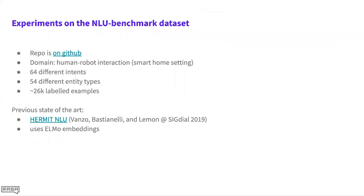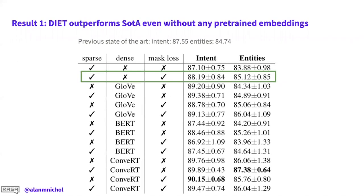The benchmark dataset we use is called the NLU benchmark dataset — there's a link to the GitHub repo where you can check it out. The domain is human-robot interaction, like a smart home assistant scenario. It's quite large: 64 different intents, 54 different entity types, and about 26,000 labeled examples. The previous state of the art on this dataset is a model called Hermit by Vanzo, Bastianelli, and Lemon from Heriot-Watt University, presented at SigDial last year, using ELMO embeddings.